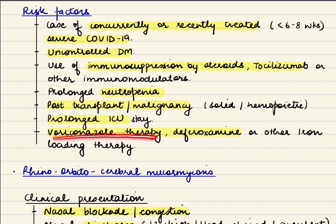Patients with prolonged ICU stays, prolonged hospitalization, and prolonged ventilation are also predisposed. If the patient has received voriconazole therapy for aspergillosis, or deferoxamine therapy or other iron loading therapies, as high free serum iron predisposes to mucor because mucor feeds on iron.